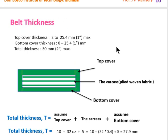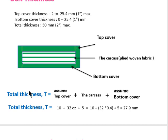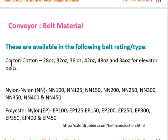The belt thickness has three components: top cover, bottom cover, and carcass. The top cover can range from 2 mm to 25.4 mm, the bottom cover from 0 to 25.4 mm, and the total thickness can be up to 50 mm. Total thickness = top cover + carcass + bottom cover. For example, with a top cover of 10 mm, a 32 oz carcass (32 × 0.4 = 12.8 mm), and a bottom cover of 5 mm, total thickness is 27.8 mm.